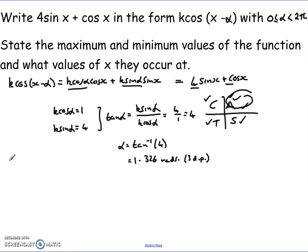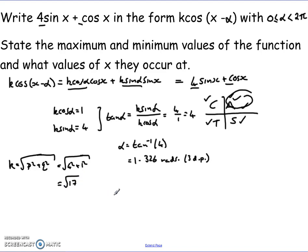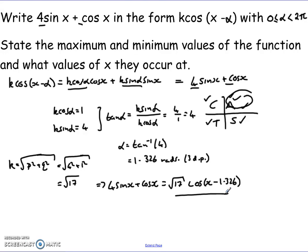We can then get our value of k. Remember, k equals the square root of p² plus q², where p and q come from the coefficients in our original function. In this case, it's the square root of 4² plus 1², which is the square root of 16 plus 1, so k equals √17. Keep it in this form — don't round it. Therefore, 4 sin x plus cos x can be written as √17 · cos(x − 1.326 radians).